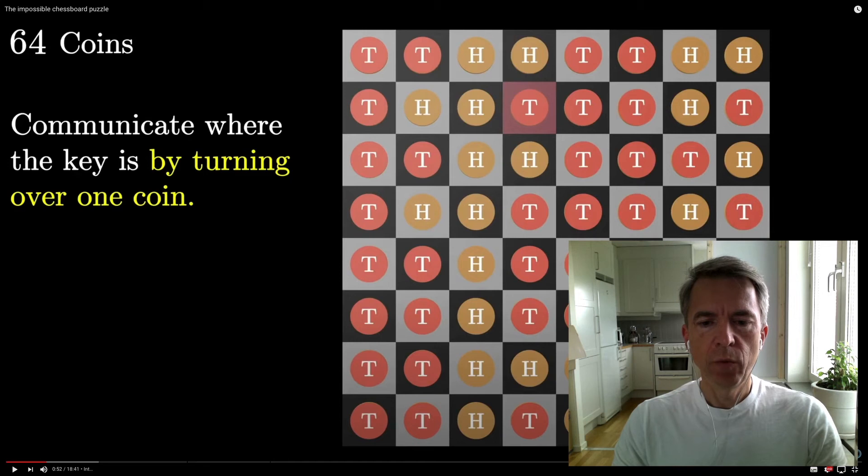The extreme case where the starting board is all heads or tails is interesting because then we can't use the parity bit flipping, because flipping a coin will always change the parity of the board or any row or column where the flipping occurs. But then of course if it's all heads or tails, the strategy could just be that prisoner number one flips the coin where the key is, and prisoner number two will easily spot the flipped coin and locate the key.